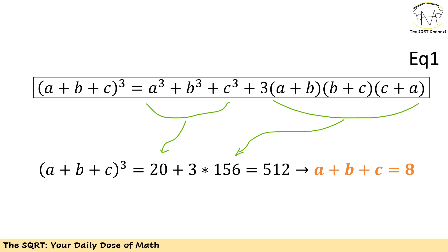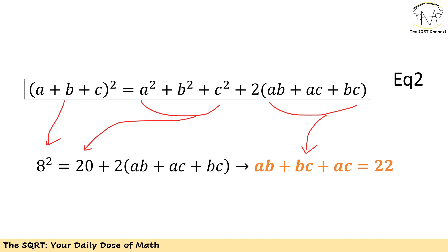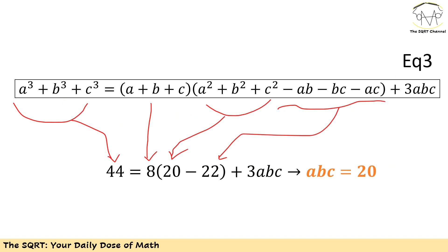Now using identity 2 I can expand (a plus b plus c) squared. I know a plus b plus c is 8 and a squared plus b squared plus c squared is 20, so I can solve for ab plus ac plus bc, which gives 22. Then using identity 3 with a cubed plus b cubed plus c cubed equals 44, a plus b plus c equals 8, a squared plus b squared plus c squared equals 20, and ab plus bc plus ac equals 22, I find that abc equals 20.